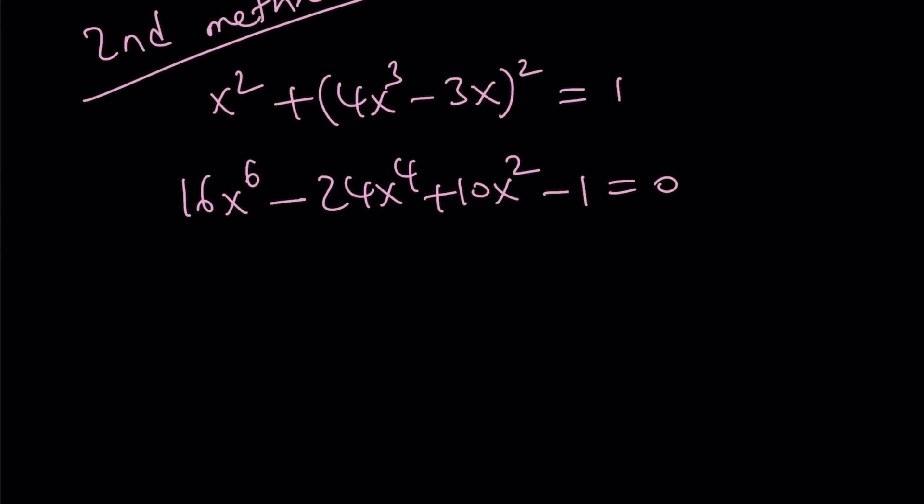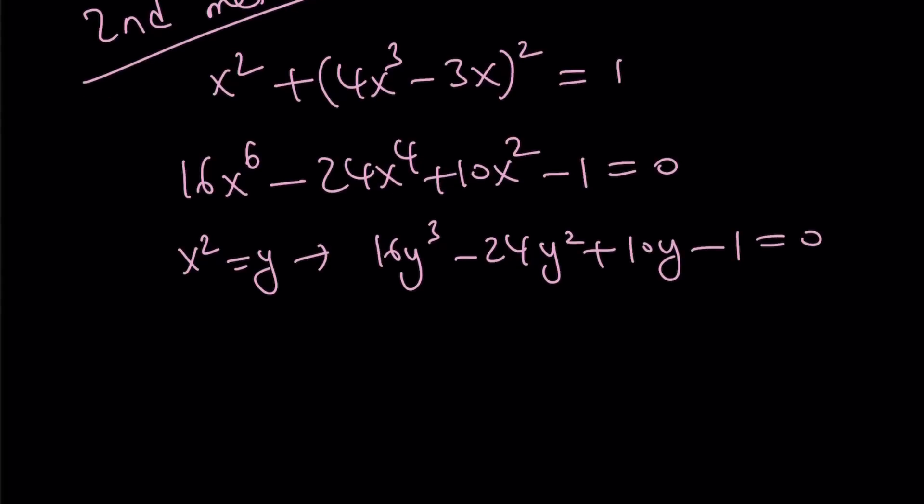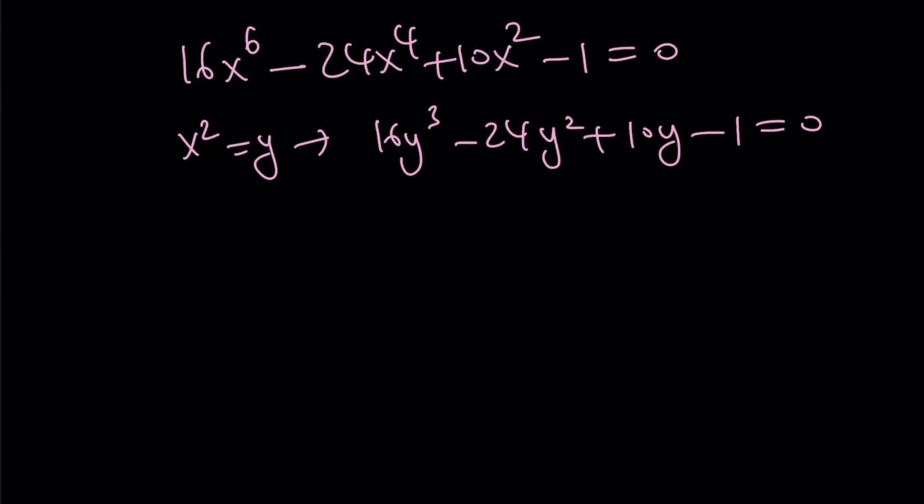And then you could basically set x squared equal to y. That gives you 16y cubed minus 24y squared plus 10y minus 1 equals 0. This is cubic and by using rational root theorem we realize that y equals 1 half is a solution. Therefore,